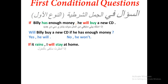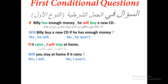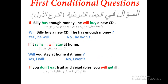Let's take another example. How can I make a question? I take 'will' and change it with the subject. Here I'm asking you, and you answer with 'I.' For example: 'How are you?' — 'I am fine.' So the question is: 'Will you stay at home if it rains?' Answer: 'Yes, I will' or 'No, I won't.'